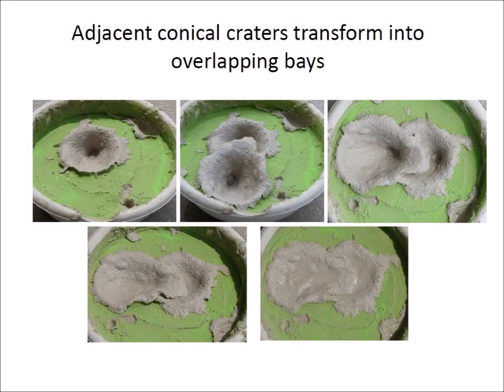The impact experiments help to answer the question of how the overlapping Carolina Bays formed while retaining their elliptical shape. Viscous relaxation decreases the depth of adjacent conical craters to form the elliptical base, and the overlaps follow the geological principle of superposition in which newer features cover older features.